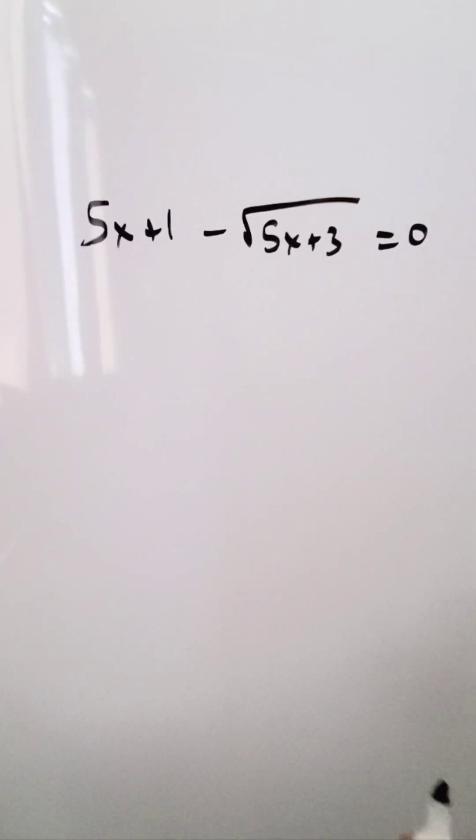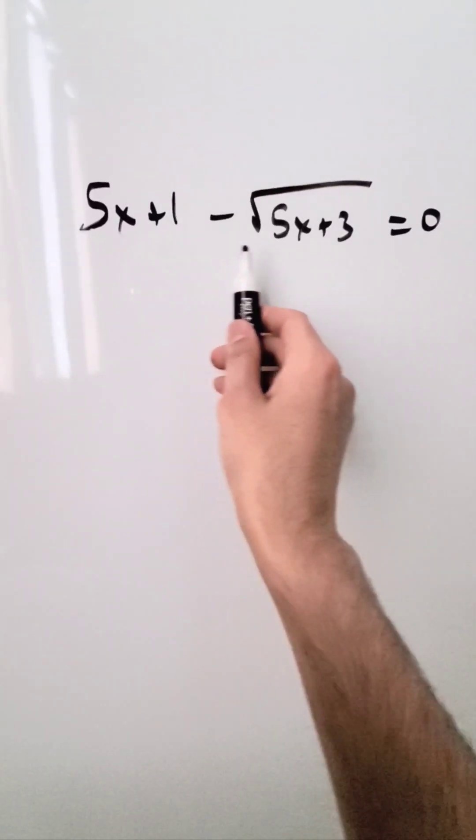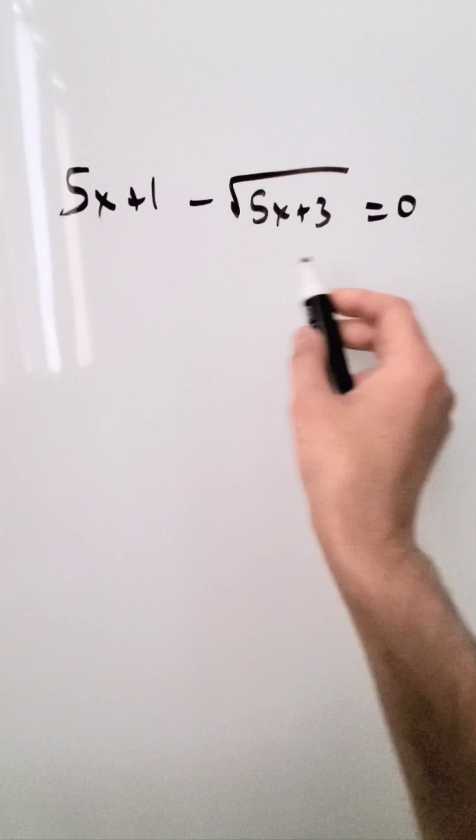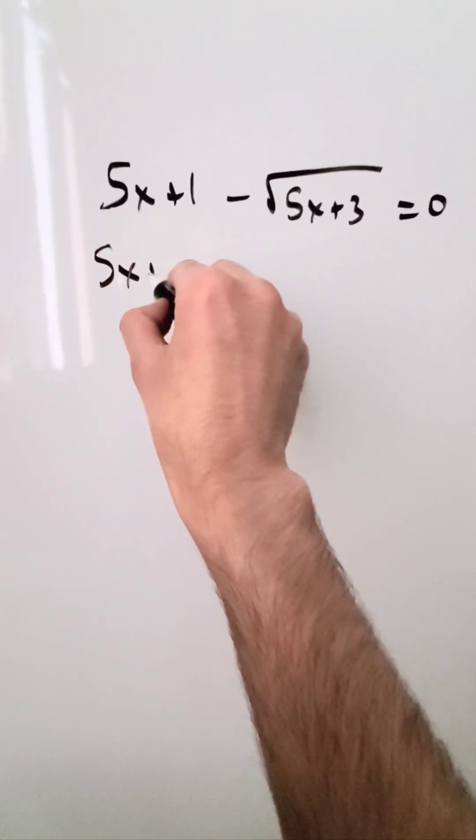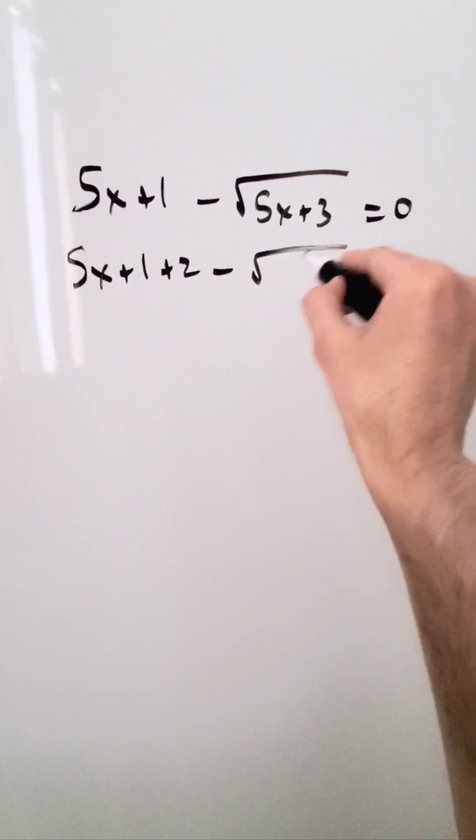Look here at this expression. Find the value of x. We will do this in a different way. 5x plus 1 minus square root 5x plus 3 equals 0. I will do this: 5x plus 1 plus 2 minus root 5x plus 3 equals 2.